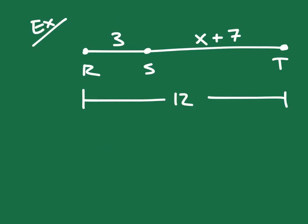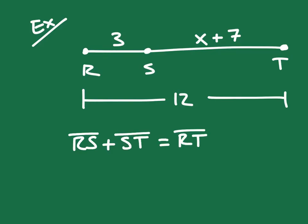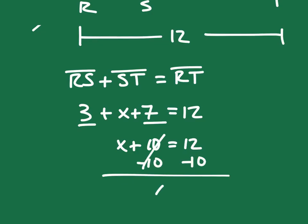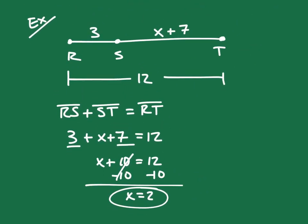We can extend the segment addition postulate to algebraic problems. If segments RS and ST combine to give the whole segment RT, then RS plus ST equals RT. Substituting RS equals 3 and ST equals X plus 7, and setting the sum equal to RT equals 12, we get 3 plus X plus 7 equals 12. Combining like terms gives X plus 10 equals 12, and subtracting 10 from both sides gives X equals 2.